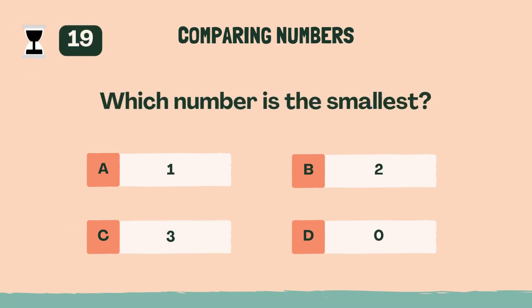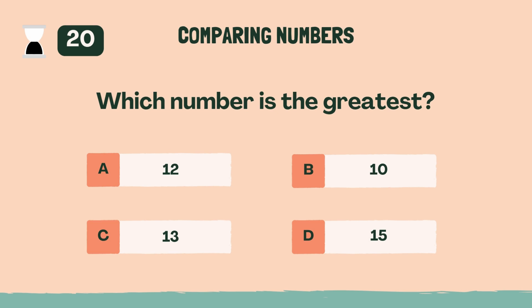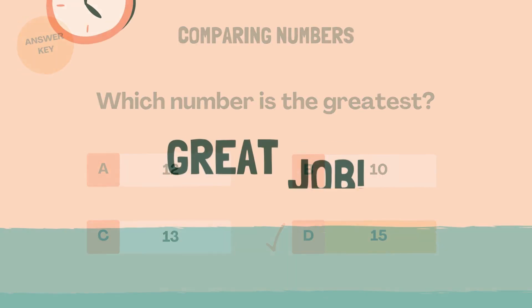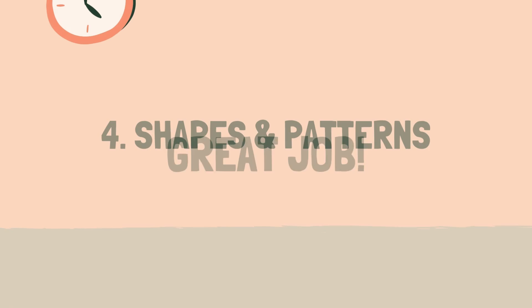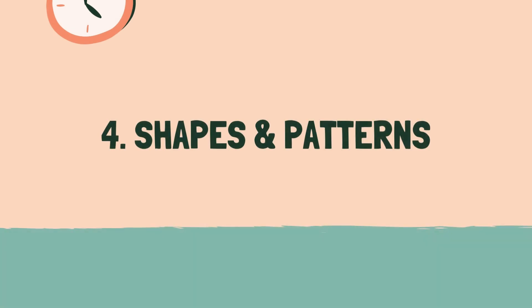Which number is the smallest? D, 0. Which number is the greatest? D, 15. Great job. Ready for some shapes and patterns? Category 4. Shapes and patterns.